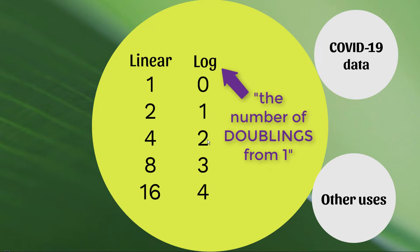A log value of two means, yes, let's double twice. So we go one, and we double it to two, and we double it to four. So this log scale is effectively a counter of the number of doubles we've completed, starting from the number one.